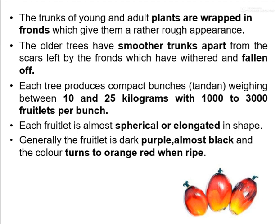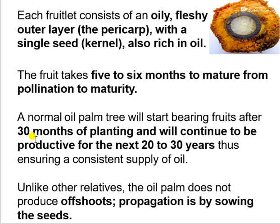Each tree produces compact bunches weighing between 20 to 25 kilograms with 1000 to 3000 fruitlets per bunch. Each fruitlet is almost spherical and elongated in shape. Generally the fruitlet is dark purple, almost black, and the color turns orange-red when ripe. In this picture we can see the inner portion of oil palm. Each fruitlet consists of an oily fleshy outer layer, the pericarp, with a single seed — the kernel — also rich in oil.